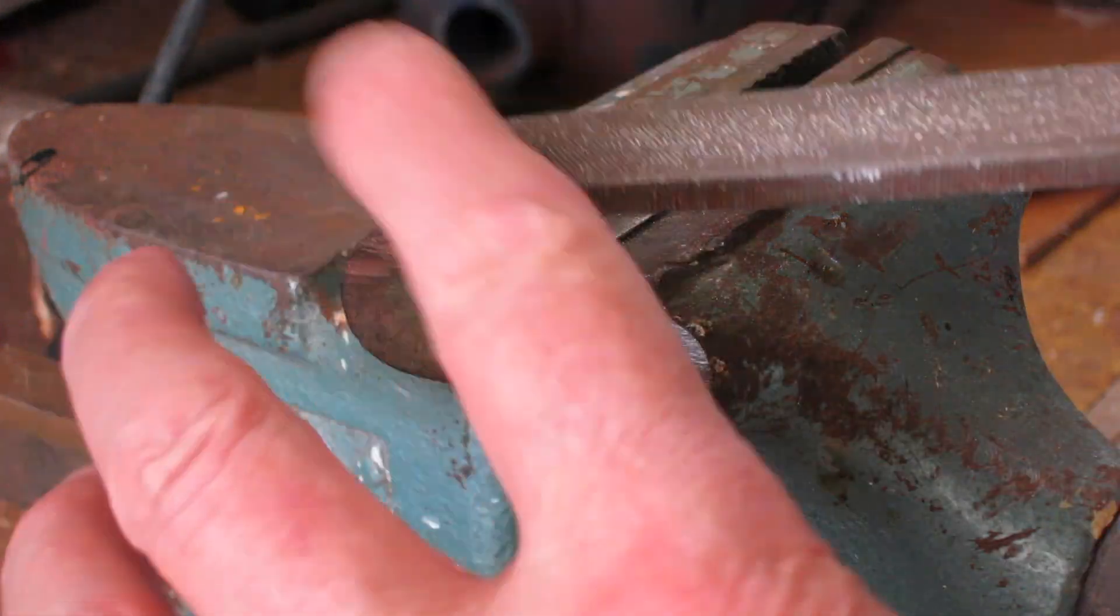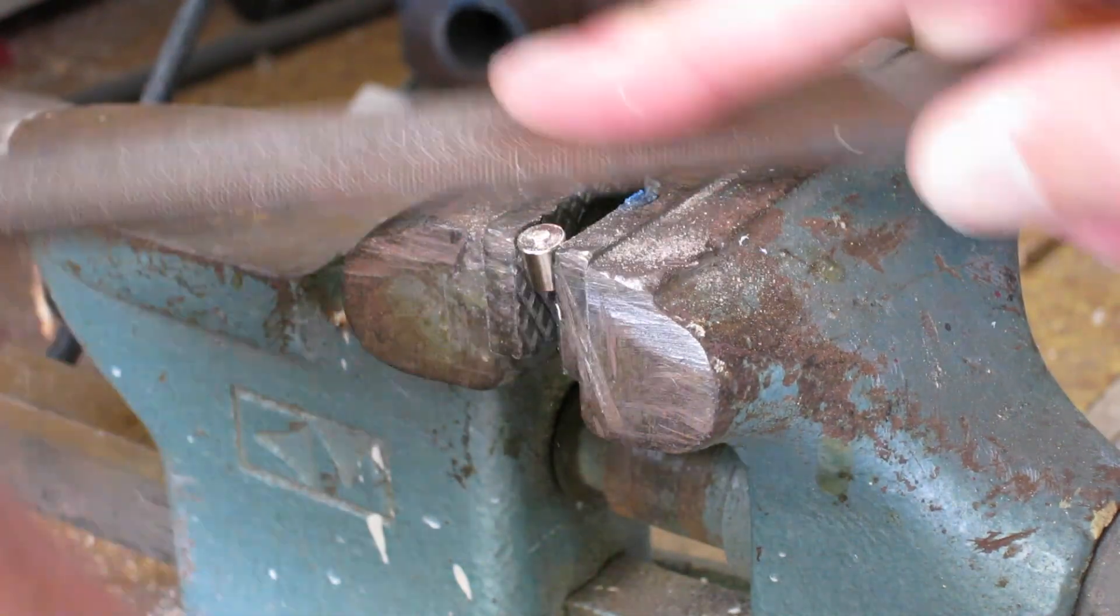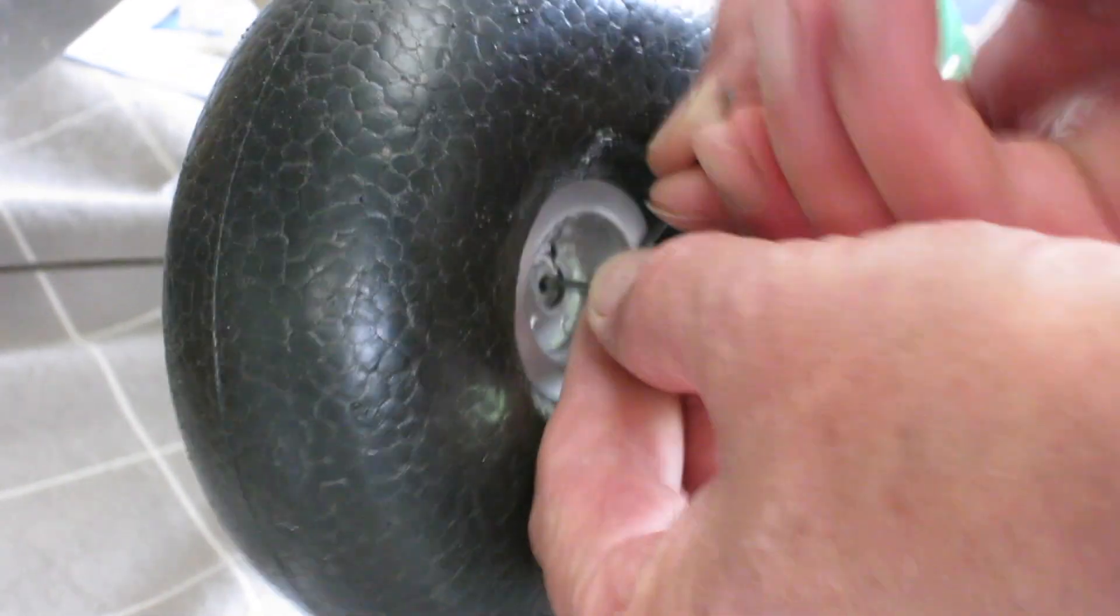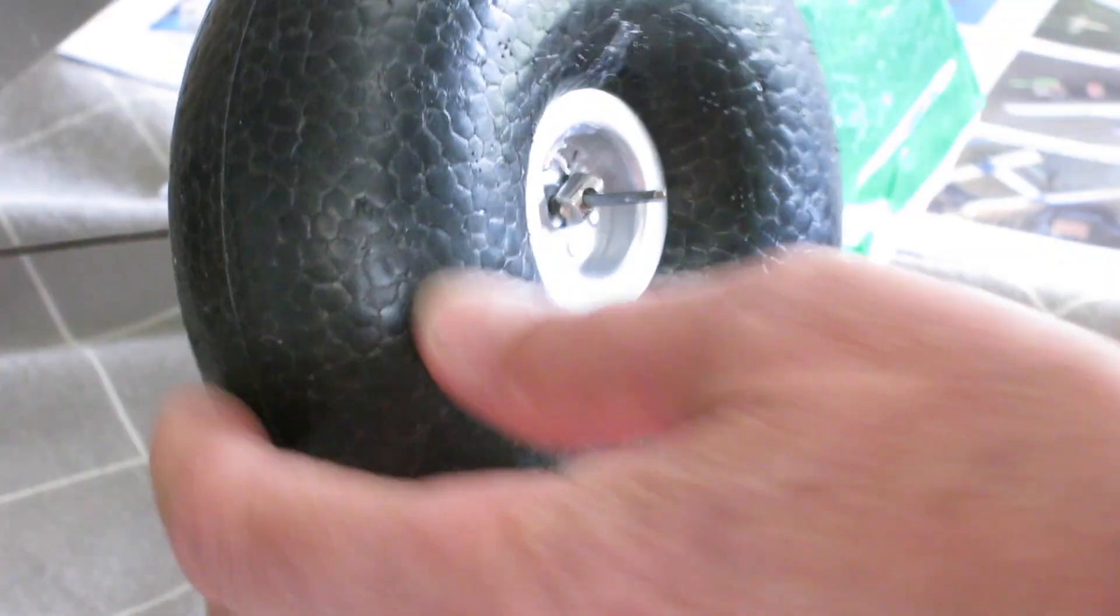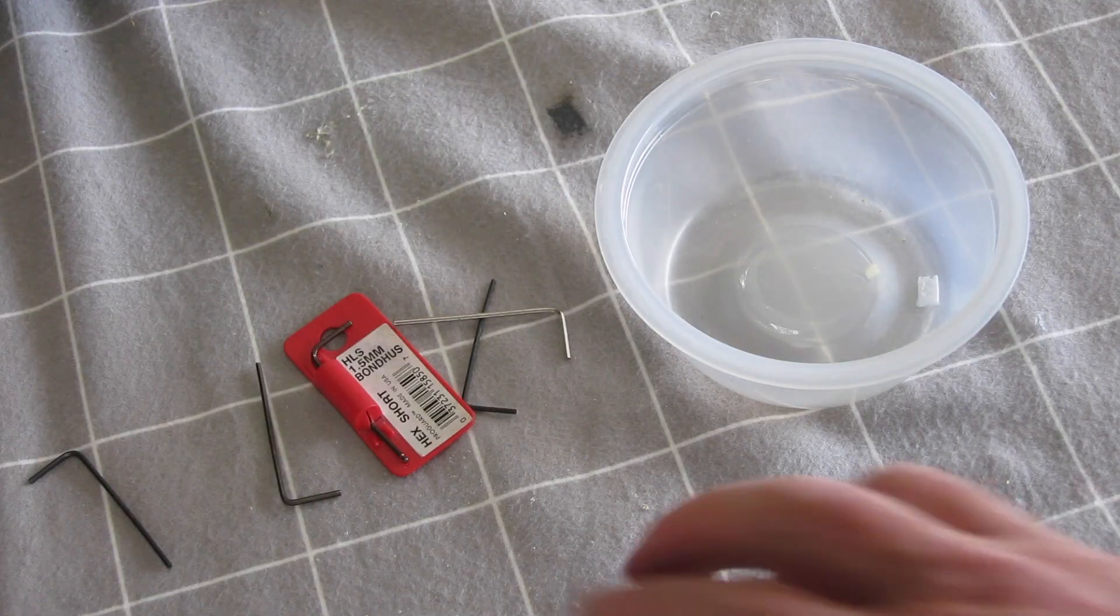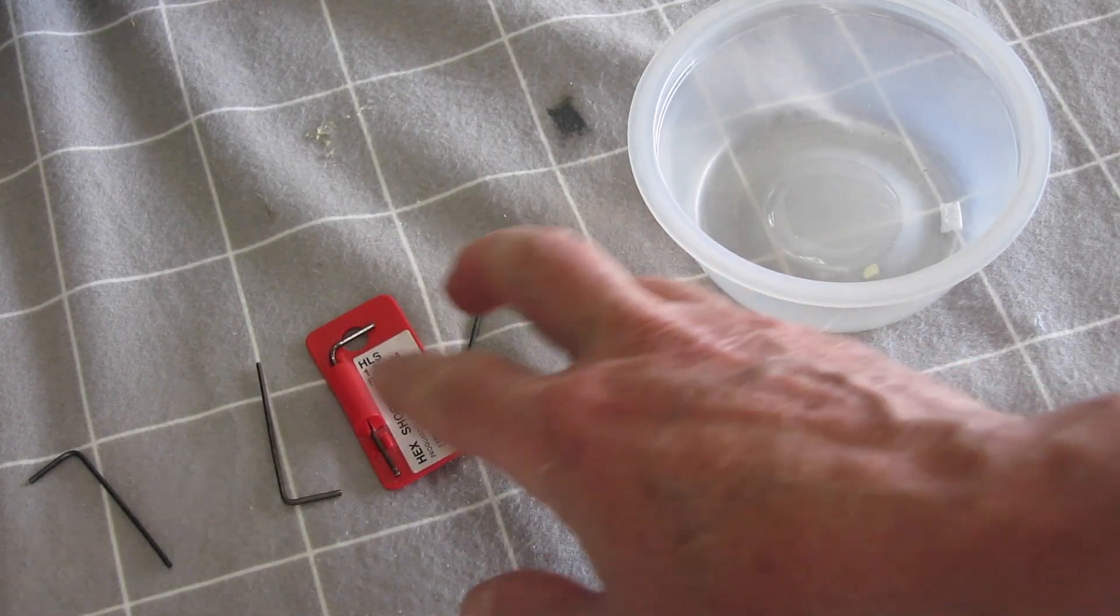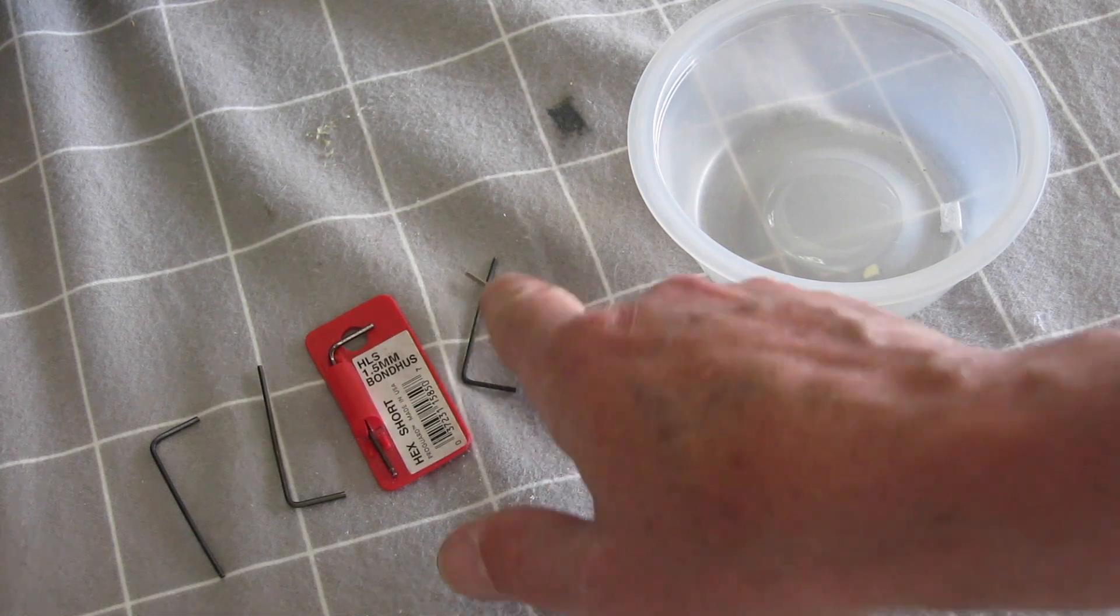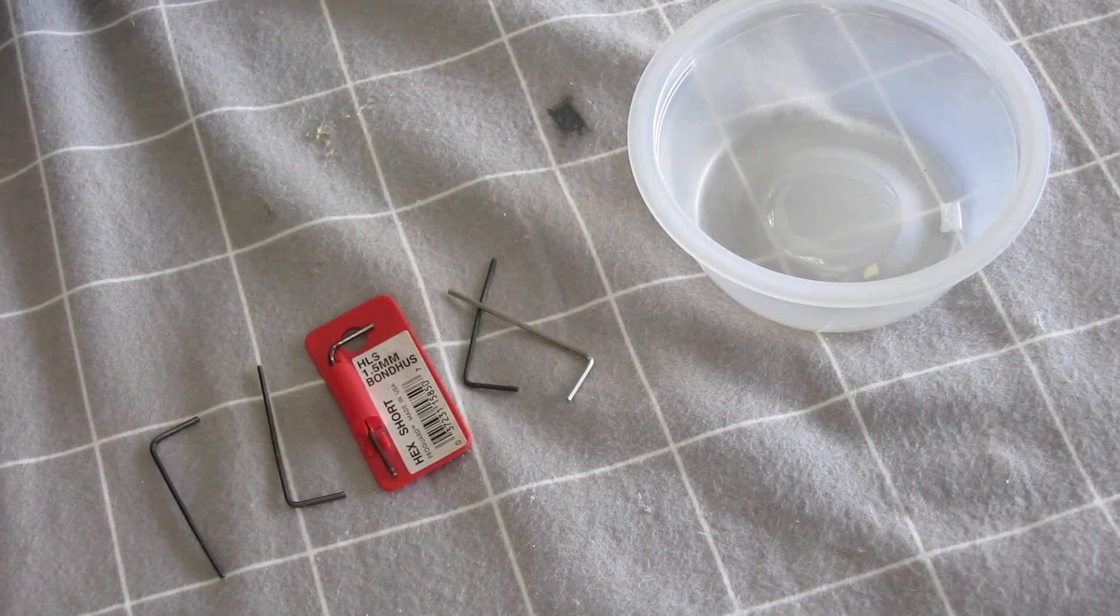I'm just filing off that sharp edge. And here's another tip: what do you do with all these loose little hex wrenches that always get lost?